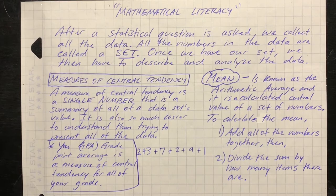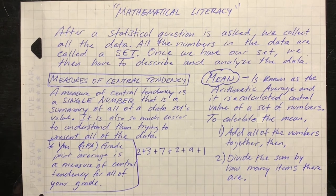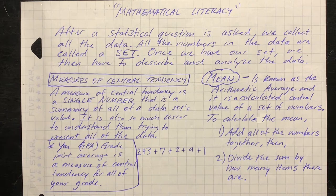Mathematical literacy: after a statistical question is asked, we have to collect all the data — all the information — quantitatively and qualitatively. All the numbers that are in the data are called a set. Once we have our set, we then have to describe and analyze that data. We have the measures of central tendency — a measurement represented as a single number that summarizes all the data set values. It's much easier to understand than trying to present all the data.